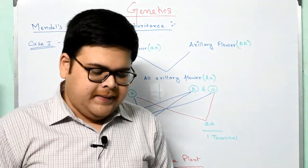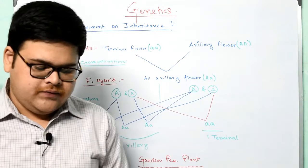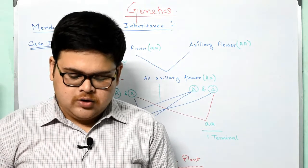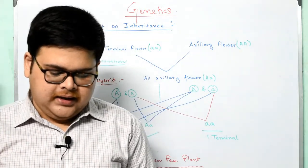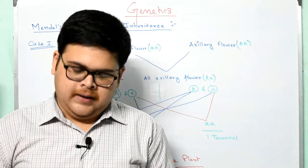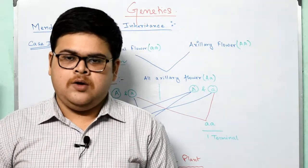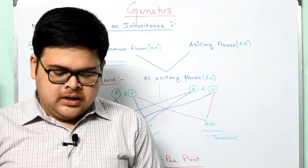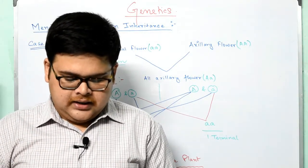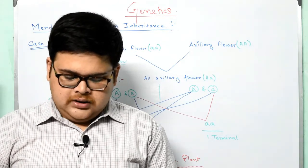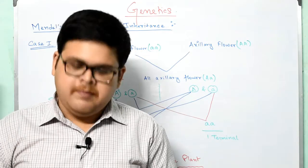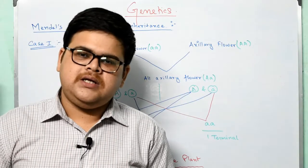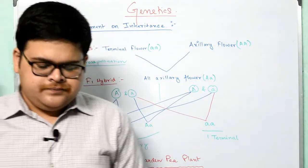Mendel's experiment on inheritance: the basic principle of genetics was discovered for the first time by Gregor John Mendel in the mid of the 19th century. Mendel was an Austrian monk and he conducted breeding experiments on garden pea. Why garden pea and not any other plant — that we will also learn. His findings became a milestone in biology. Mendel selected garden pea for the following reasons.